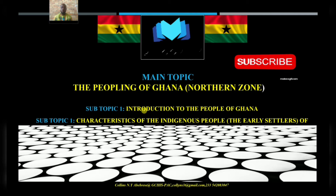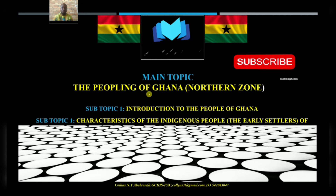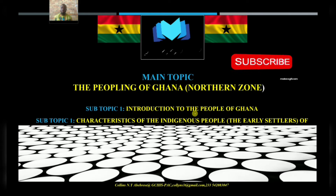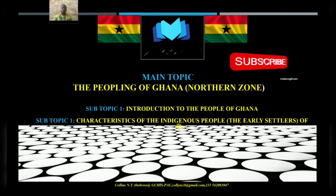Today we are looking at Form 2 history, and the broad topic we will be looking at is the peopling of Ghana in the northern zones. We will firstly look at the northern zone area, the peopling of Ghana, and then specifically we will look at the people in Ghana. We will introduce ourselves to the various people that live in the country called Ghana today in West Africa, and then we also look at the characteristics of the indigenous people who settled in northern Ghana.